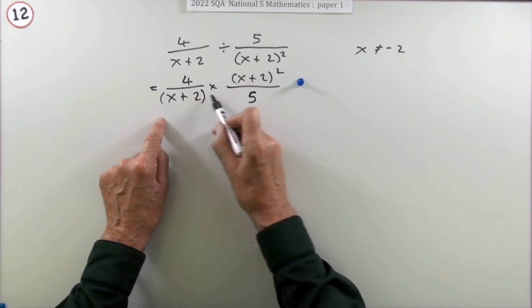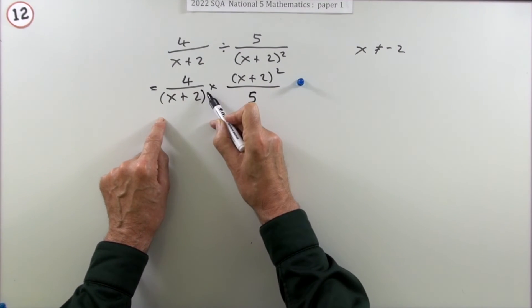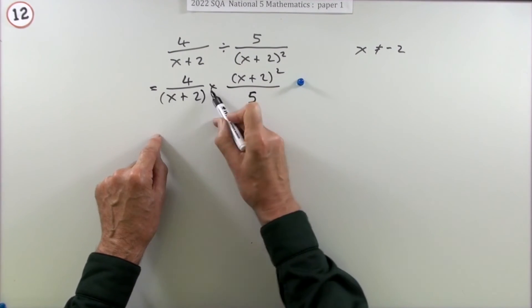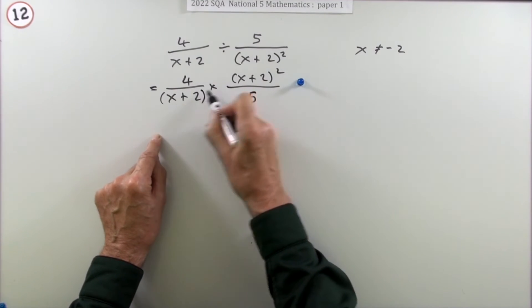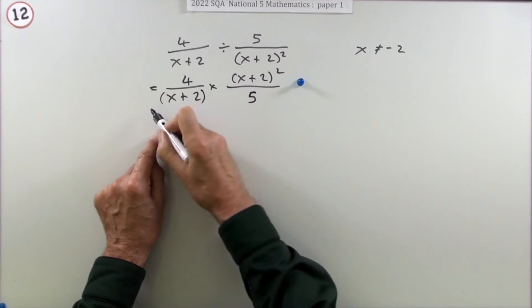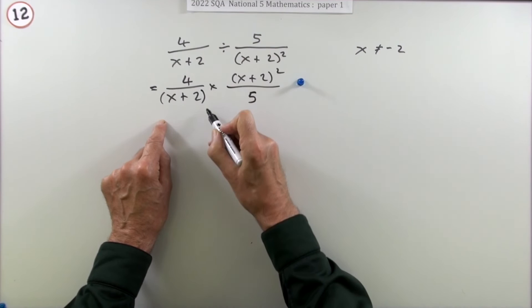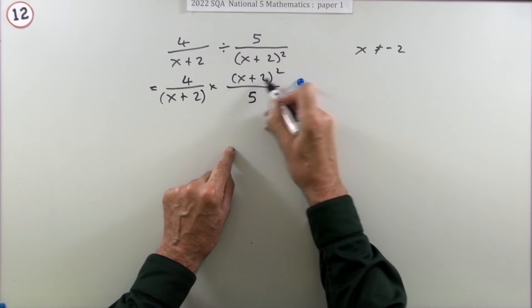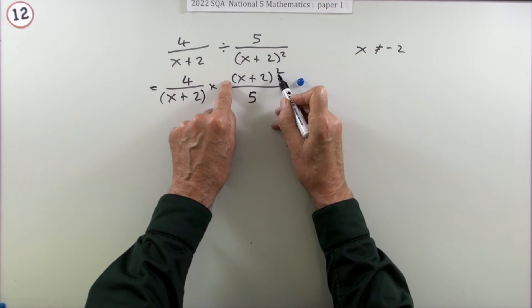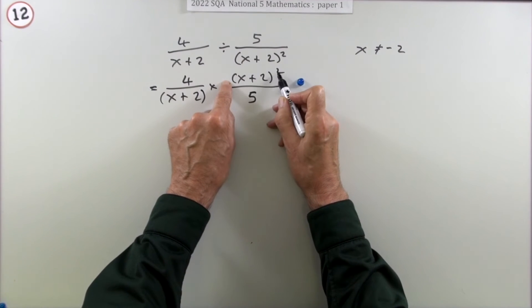Well if you divide the top and the bottom by x plus 2, that will get knocked out. Well it doesn't actually disappear, it gets knocked out and gets changed into a 1, but I don't really want to score out the working as if I've made a mistake. That would get knocked out and get replaced by 1. That wouldn't get knocked out because there's two of them, so one of them would get knocked out leaving the other one.